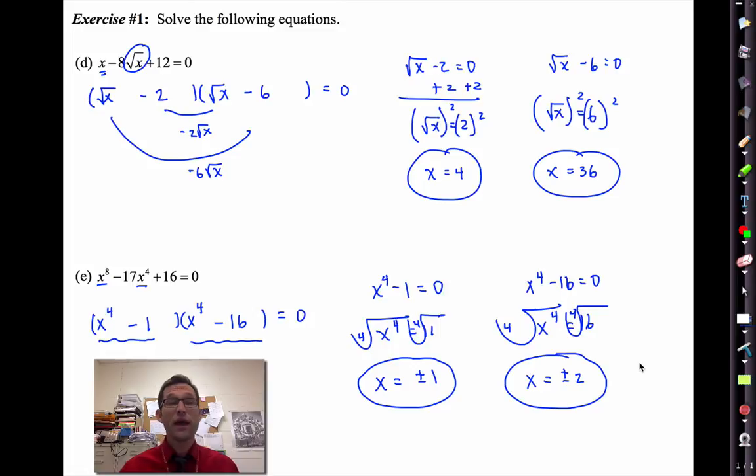There's nothing wrong with continuing to factor x to the fourth minus one into x squared plus one, x squared minus one, etc. But since x only shows up once, why not just use inverses at that point? Pause the video now, write down anything you need to, then we're scrubbing out the text.